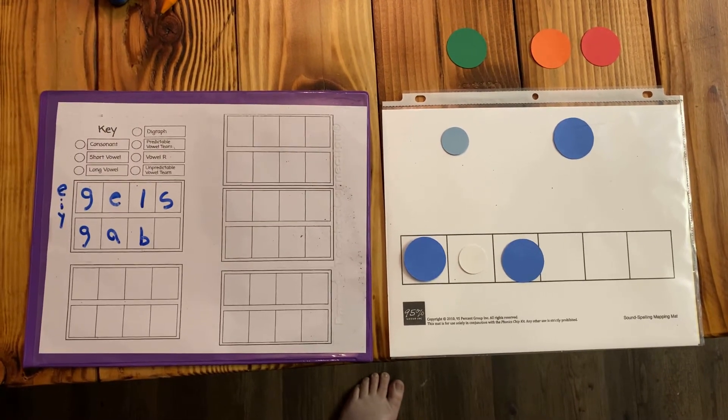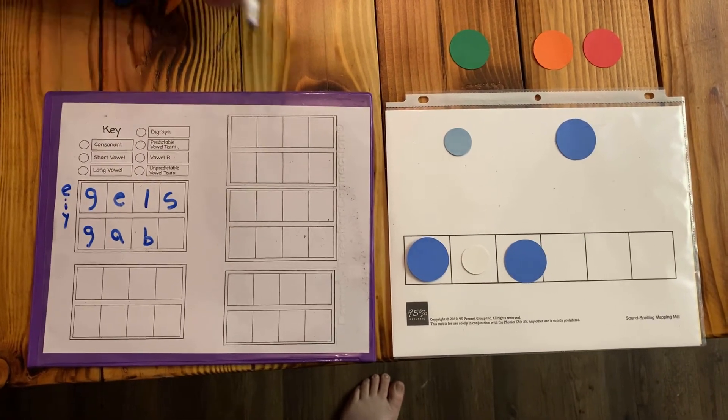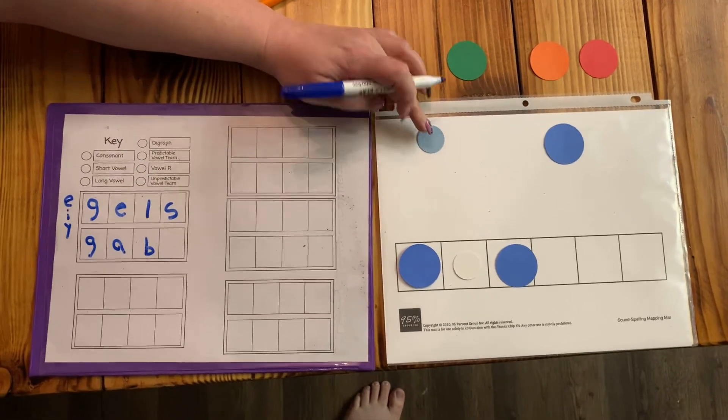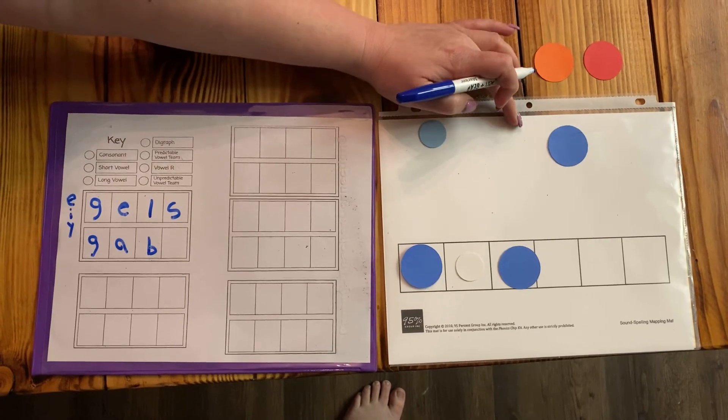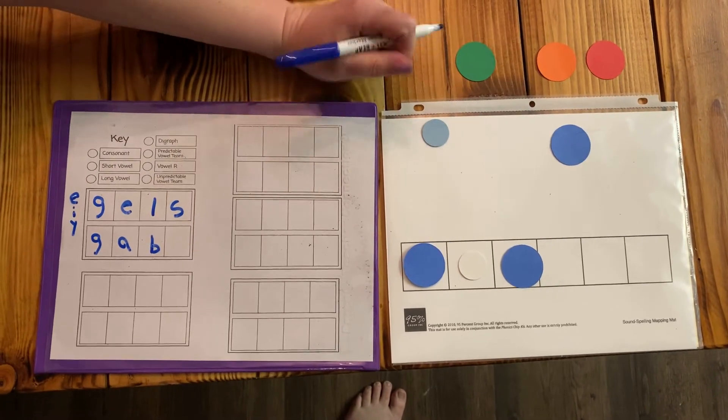And you'll see that we have the hard G, and it has the A. So your rules are the same. Soft G is going to be an I, an E, and a Y. Hard G is going to be your A, your O, your U, and any other consonants.